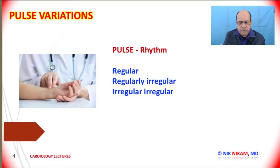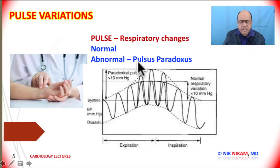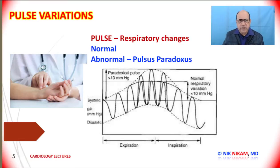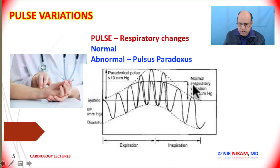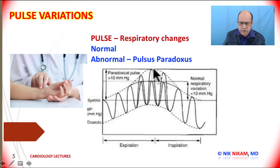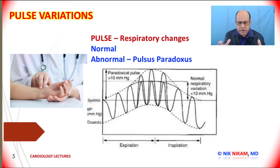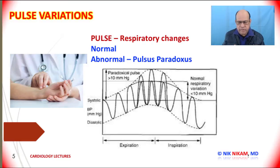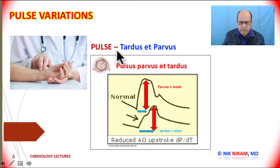Let's look at respiratory variations. Pulse volume and pressure vary with inspiration and expiration. During inspiration, the normal pulse pressure drops by 10 mmHg, and increases during expiration by 10 mmHg. However, if the variation exceeds 10 mmHg — for example, 20 mmHg between inspiration and expiration — then we are talking about pulsus paradoxus. Pulsus paradoxus is an important sign seen in patients with cardiac tamponade.